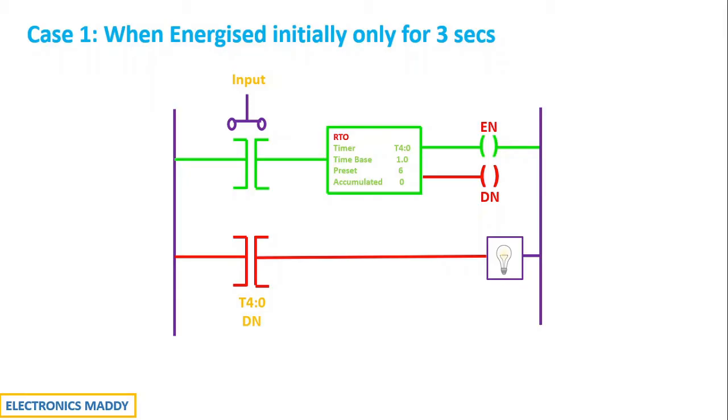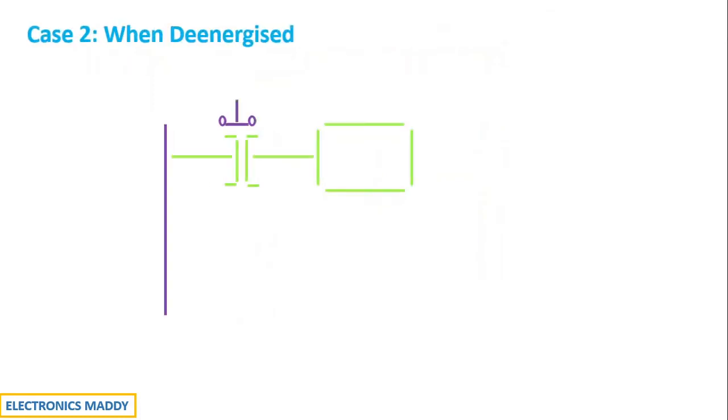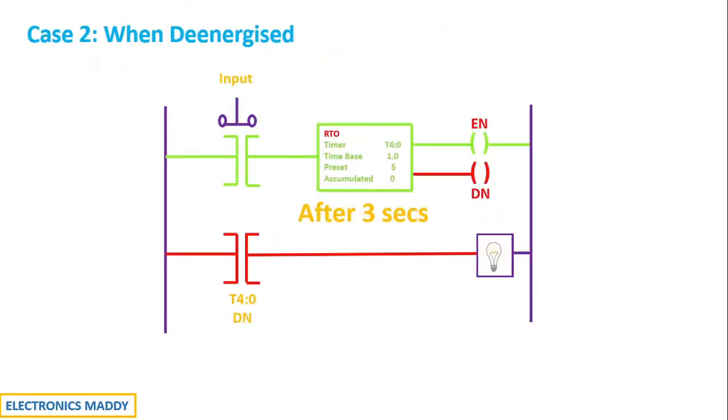Considering that as case 2, I will be starting off from the point where we left. After 3 seconds, I will be de-energizing this by releasing the push button. Once I release the push button switch, the contacts get de-energized, the rung gets de-energized, the timer gets de-energized, and the Enable goes low instantly. It is often understood that Enable always follows the input. And that is why it goes high to low and low to high depending upon the input conditions.